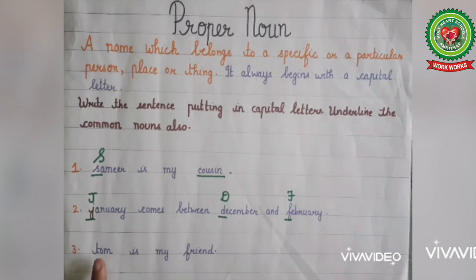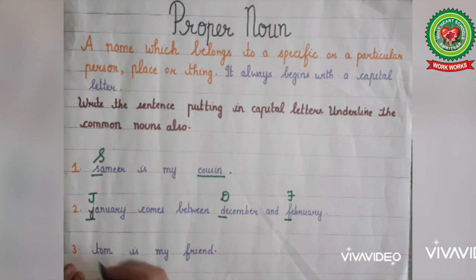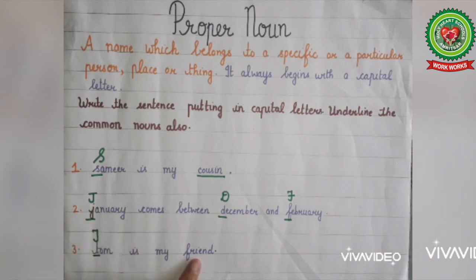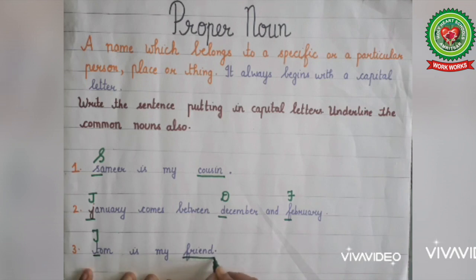Read the next example: 'Tom is my friend.' Tom is the name of a particular person, so it is a proper noun — we will make the first letter capital: Tom. Friend is the name of a common person, so it is a common noun — we will underline friend. I hope you have understood the concept of proper noun. You can do the related exercise in your elementary grammar book. Thank you.